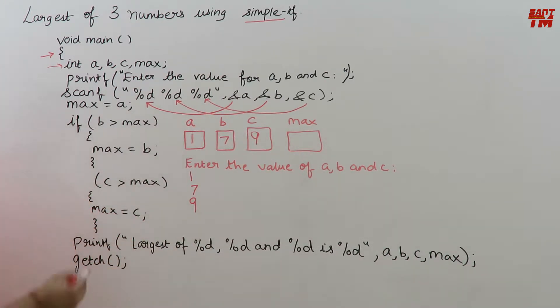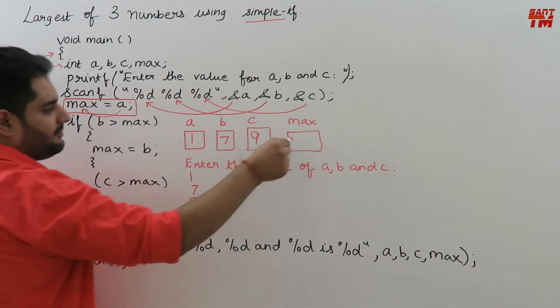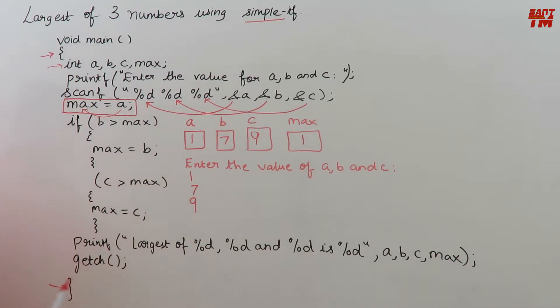Then the statement. This is an important statement for this program. Max is equal to a. That means in the max I have copied the value of a. a will get copied to max. What is a? a is 1. So max will also hold 1 now.